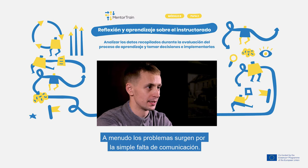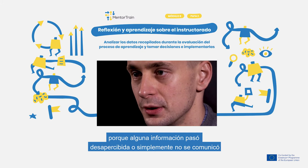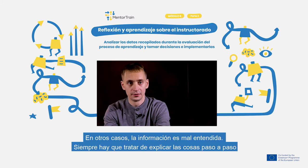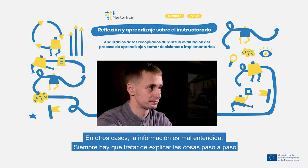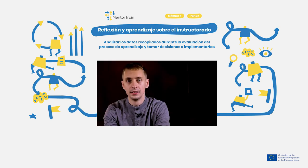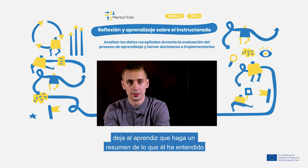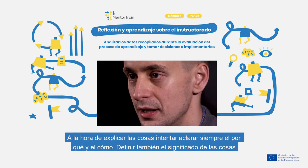Often problems can arise from simply a lack of communication. Some information can be left unnoticed or is simply not communicated, and often information can be misunderstood. Go through it step by step and see where the problem started. If the problem was about understanding the information, let the student make a short summary of how they understood it, what they had to do and how, then explain how you meant it.